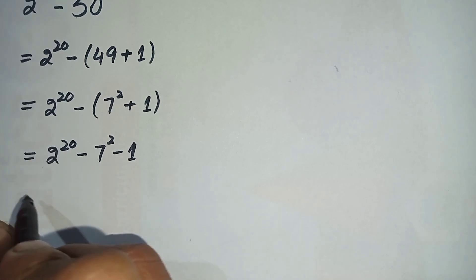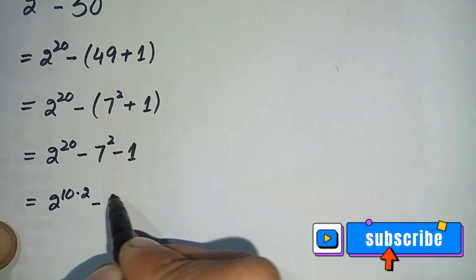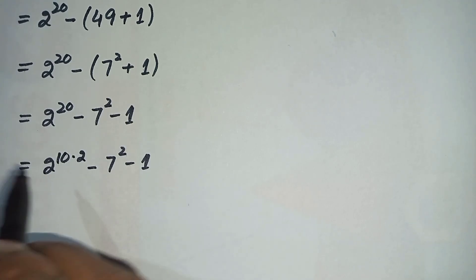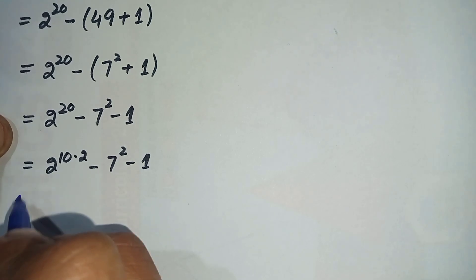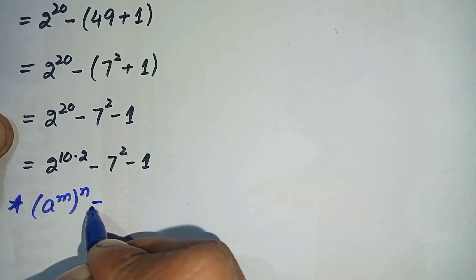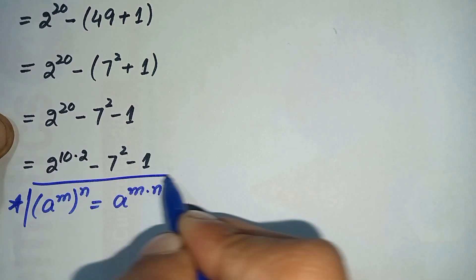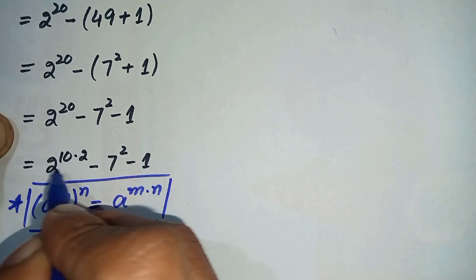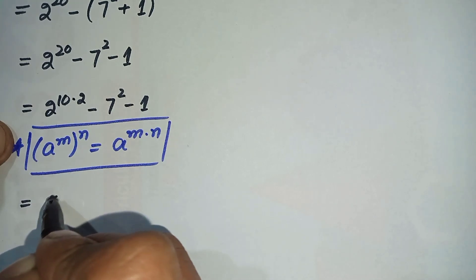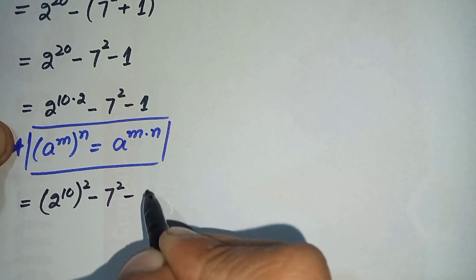Now we can rewrite 2 raised to power 20 as 2 raised to power 10, whole squared. Here we use the famous exponential property: a raised to power m, raised to power n, can also be written as a raised to power m times n. By using this property, this equation becomes 2 raised to power 10, whole squared, minus 7 squared, minus 1.